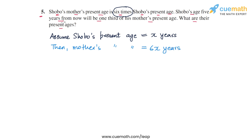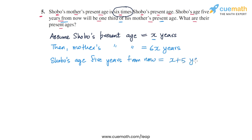Now, Shobo's age five years from now will be one-third of his mother's present age. Shobo's age five years from now will be his present age x plus five years. So Shobo's age five years from now is x plus five, and Shobo's mother's present age is six x years. We are told that Shobo's age five years from now is one-third of his mother's present age, so x plus five must be one-third of six x. This is how we get an equation in x.